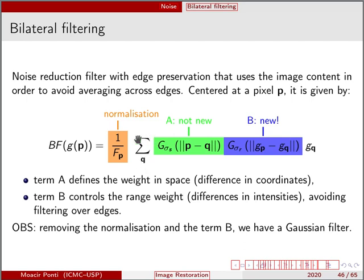So it has a normalization factor, and then it will try to minimize the difference between the value of P, so the pixel P and the value of the remaining pixels in the neighborhood, Q. So we are going to sum for every Q, which represents the neighborhood. So we want to approximate that. So this is not new.